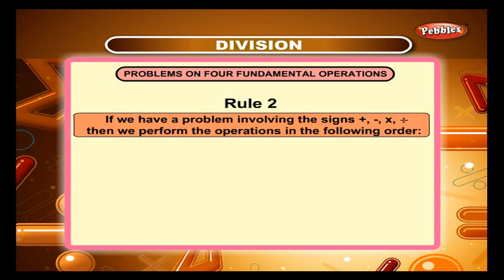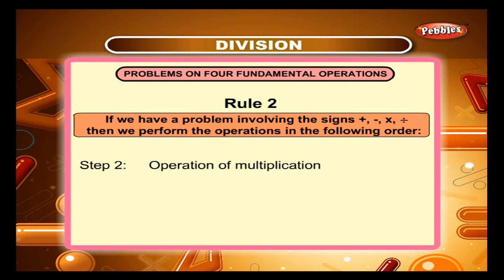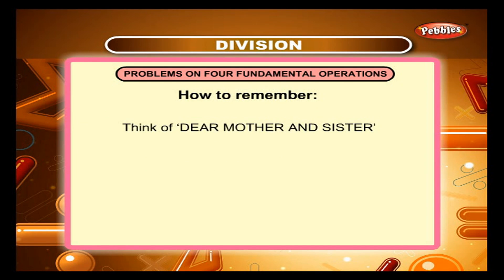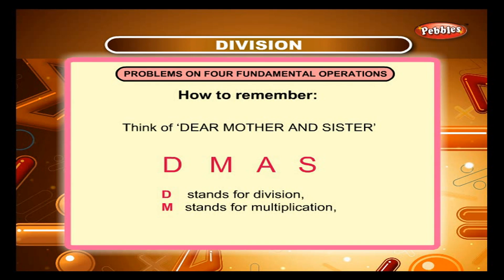Rule 2: If we have a problem involving the signs plus, minus, multiplication, and division, then we perform the operations in the following order. Step 1: operation of division. Step 2: operation of multiplication. Step 3: operation of addition. Step 4: operation of subtraction. To remember this, think of 'Dear Mother and Sister' — D, M, A, S. D stands for division, M stands for multiplication, A stands for addition, S stands for subtraction.